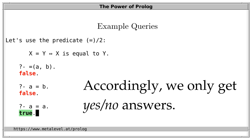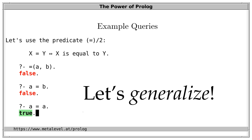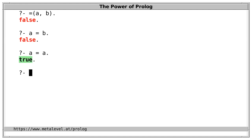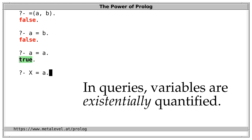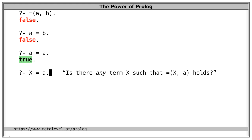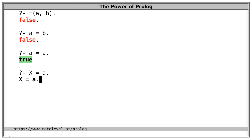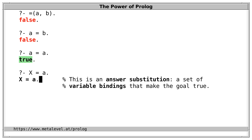The point is that we can ask Prolog something much more general. In Prolog, we generalize things by using variables instead of more concrete terms. So let's use a variable — say x — instead of a concrete atom for the first argument. In queries, variables are existentially quantified. So this query means: is there any term x such that equals of x and a holds? And the answer says yes — that's the case if x is equal to a. So we have now used Prolog to automatically find a case that holds. This is called an answer substitution: a set of variable bindings that make the goal true. If we replace x by a in the original query, then the posted goal holds.